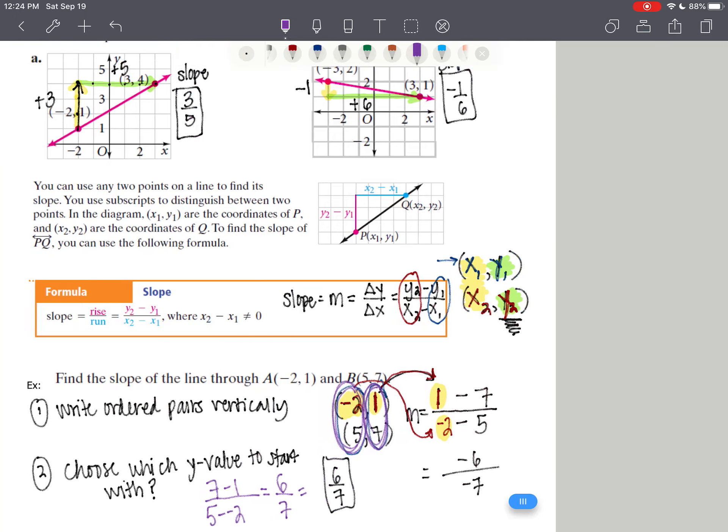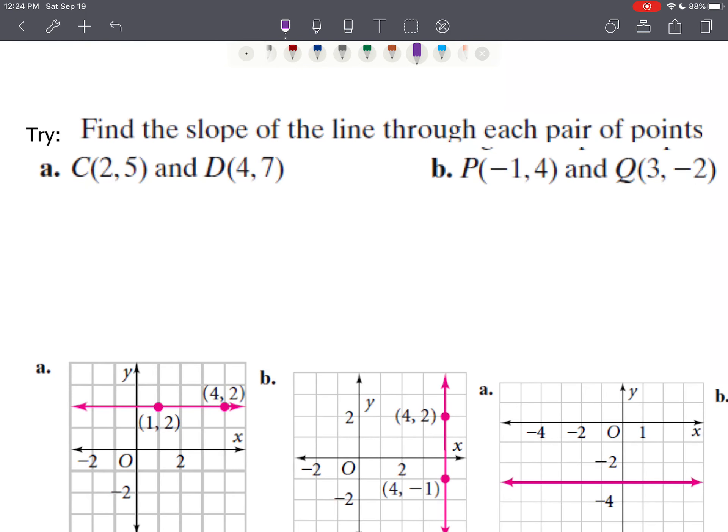The biggest takeaway here is that I write the ordered pairs vertically. So let me show you, I'm going to do this next try and then you can do this b on your own. So I rewrite the second ordered pair, 4 comma 7. And then I say, do I want to do 7 minus 5 or 5 minus 7? So now that I see the x's and the y's, I want to do 7 minus 5. Then in the denominator, since I started with 7 in the numerator, I have to start with 4 in the denominator. So then I'd have 4 minus 2.